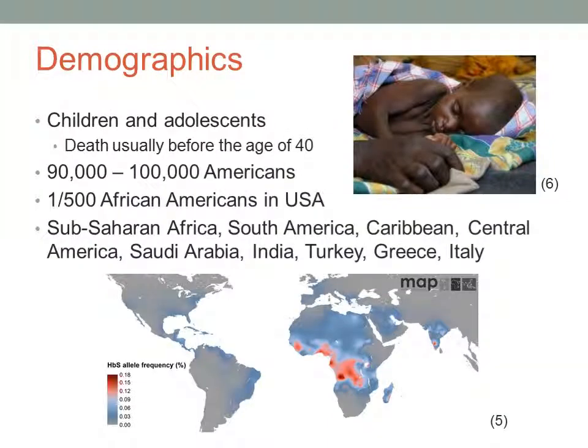According to the CDC and this map, sickle cell anemia is most commonly seen in sub-Saharan Africa, South America, the Caribbean, Central America, Saudi Arabia, India, Turkey, Greece, and Italy. This blood disease manifests mainly in children and adolescents. In homozygous recessive individuals, death usually occurs by 40 years of age. In the U.S., 1 in 500 African-American children has sickle cell anemia, and it currently affects 90,000 to 100,000 Americans.